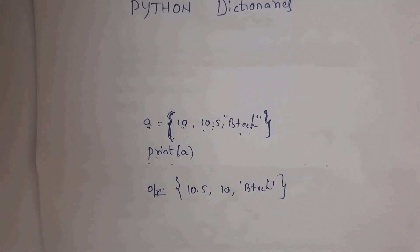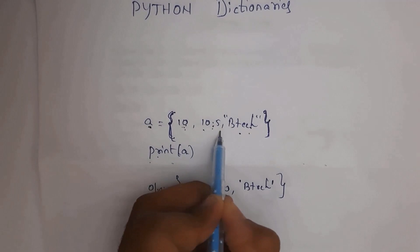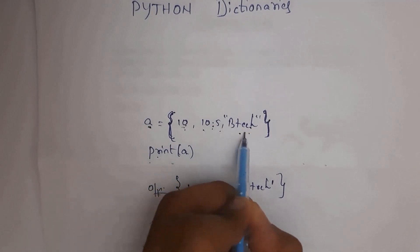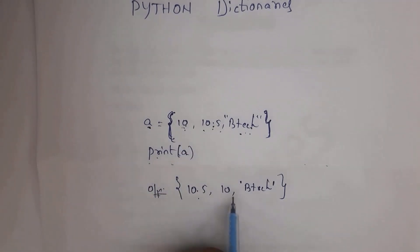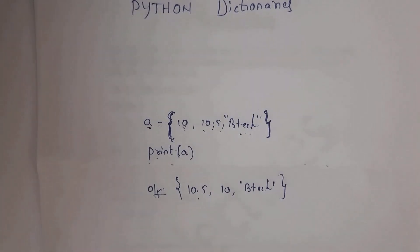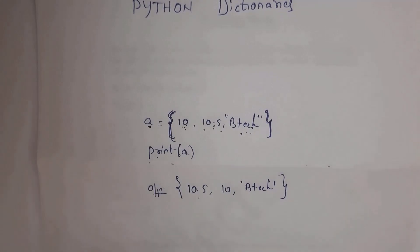Python set is an unordered collection of elements. That means in whichever order you give input, you will not receive output in that same order. In this example, I entered 10 first, then 10.5, then btec. But I got output 10.5 first, then 10, then btec. Next time when you run the same code, you may get btec first, then 10, then 10.5. This is the meaning of unordered.